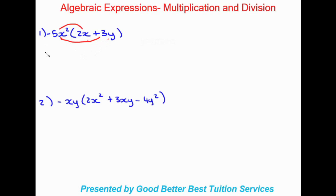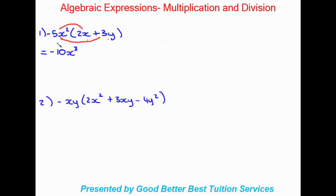Following those steps, the first thing we always need to do is look at the number first. So we're looking at negative 5 times positive 2 — that's going to give me negative 10. Then we times x squared into that x, and using laws of exponents we get x to the power of 3. So negative 5x² times 2x gives a final answer of negative 10x³. Now I'm going to times it into the second term.